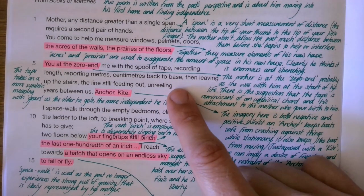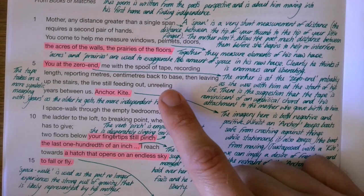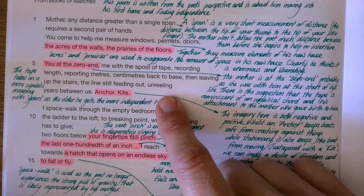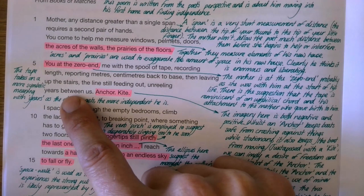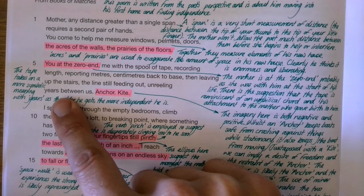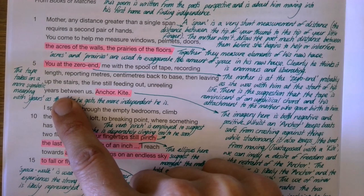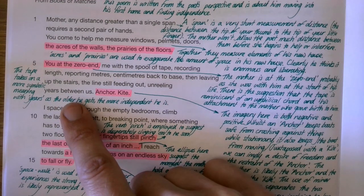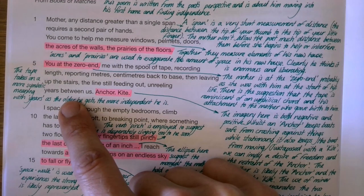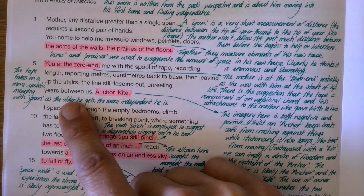He moves on then to say: then leaping up the stairs, the line still feeding out, unreeling years between us. It's interesting because it's now not just a measurement in terms of distance, but it becomes years. The separation becomes more than just distance between the two of them. It becomes time between them. So as he gets older, the more independent he gets, the further away from his mother he gets.